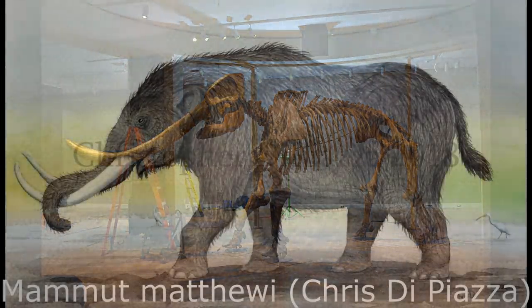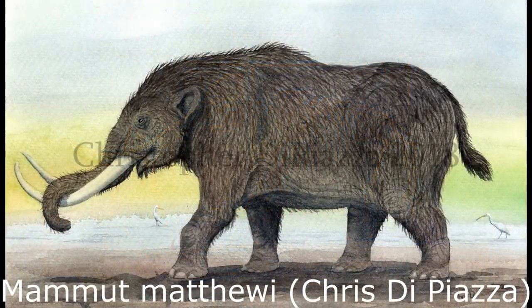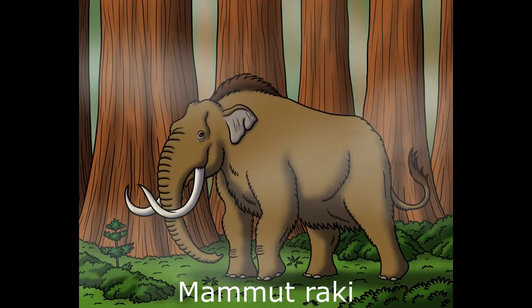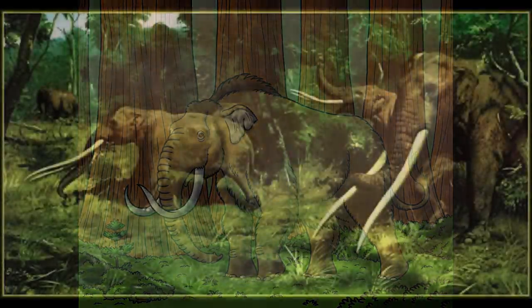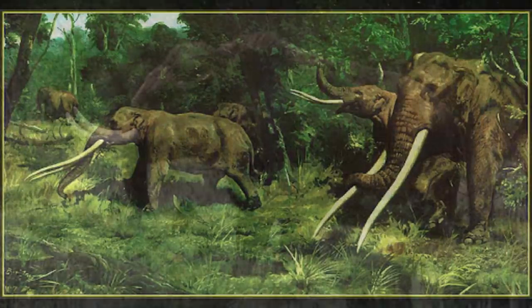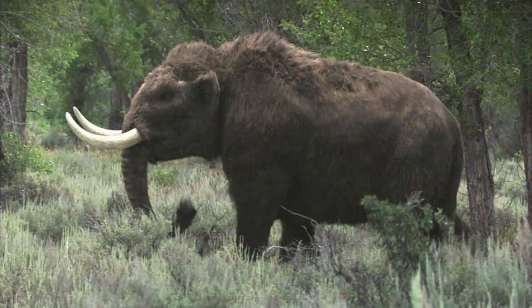The oldest species was Mammut mathuai, from the early Pliocene of the Snake Creek Formation, Nebraska, roughly 5 million years ago, and Mammut raki, from similarly aged deposits of New Mexico. M. mathuai has also been reported from a single site in China, although this may represent a specimen of Sinomammut instead. M. raki, along with M. mathuai, have at times been considered invalid due to a lack of distinguishing anatomical features.